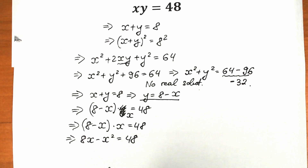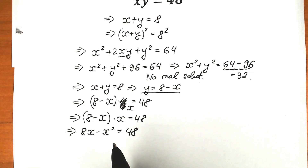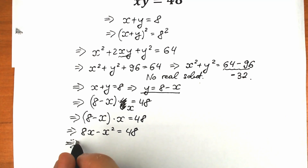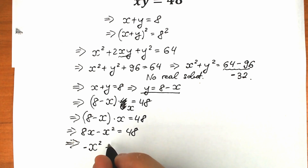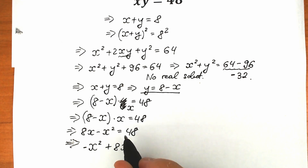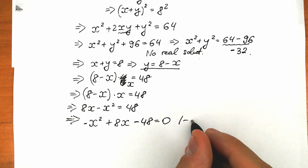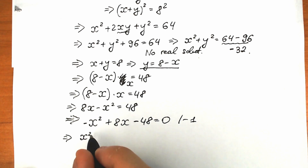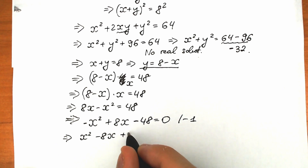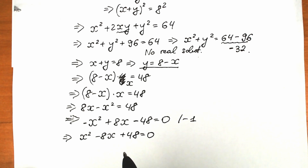Let's rearrange into the classic form ax squared plus bx plus c. So we write minus x squared plus 8x minus 48 equals 0. Multiplying both sides by negative 1, we get x squared minus 8x plus 48 equals 0. This is a quadratic equation, and we already know we'll have complex roots here.